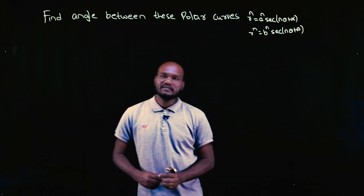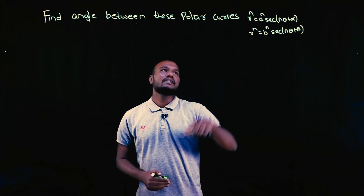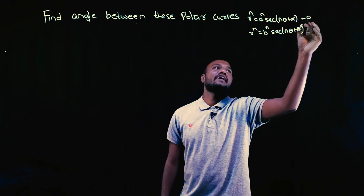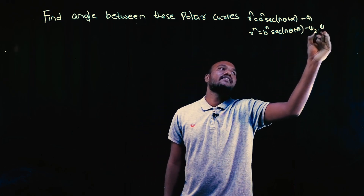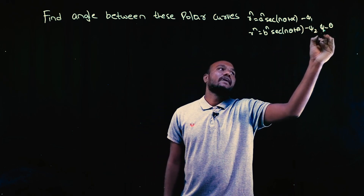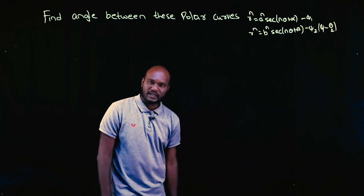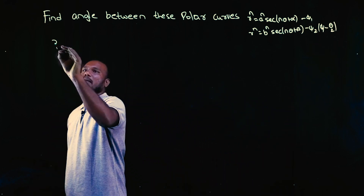Hey guys, welcome to another video in this series. We are solving 21 Scheme M1 questions from the first module, that is polar curves. Make sure to subscribe for more videos like this. In this question, we have to find the angle between two curves — we need to find φ₁, φ₂, and then φ₂ minus φ₁.